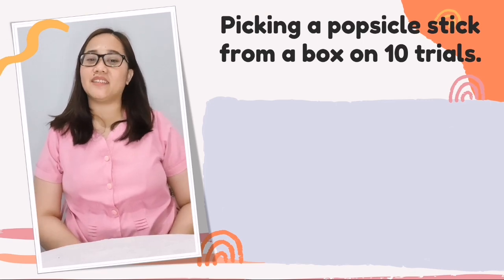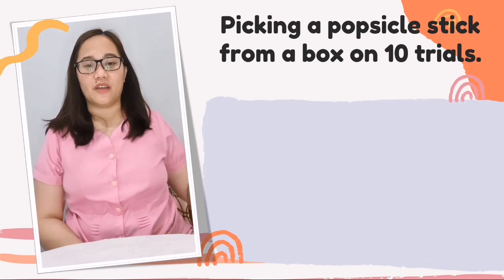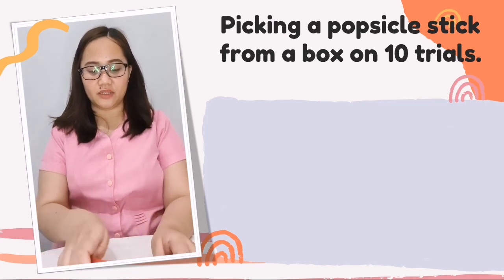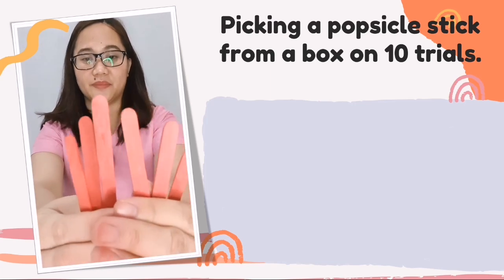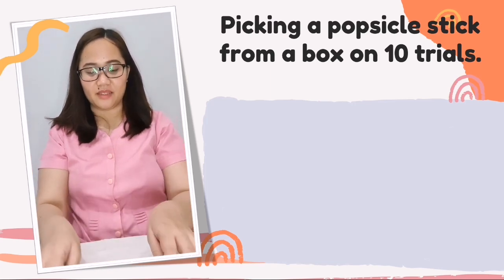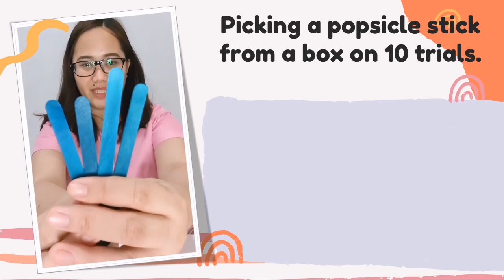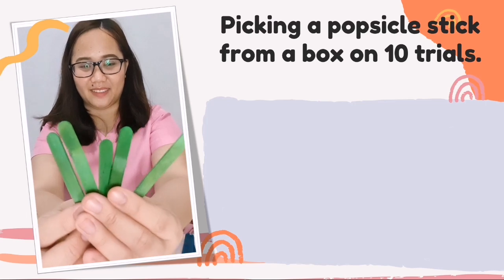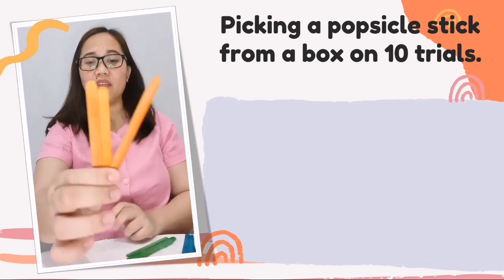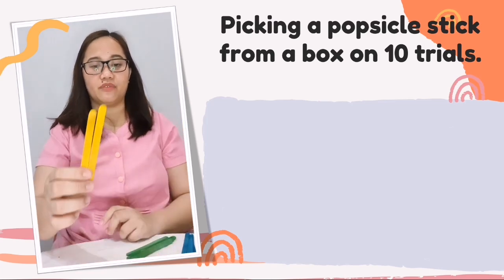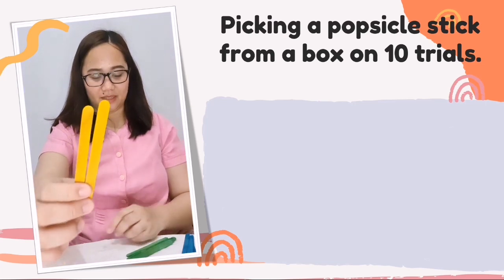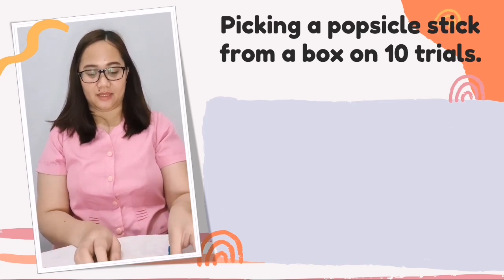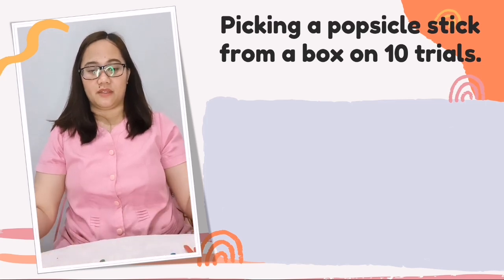Let's now have sample problems on probability of simple events. For this experiment, titled 'Picking a Popsicle Stick,' I have popsicle sticks with different colors: six red, four blue, five green, three orange, and two yellow popsicle sticks — twenty pieces in all.